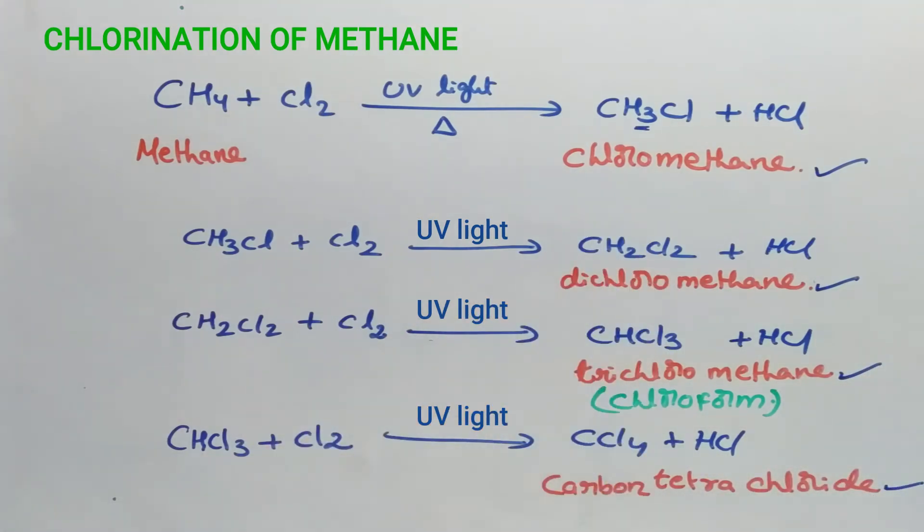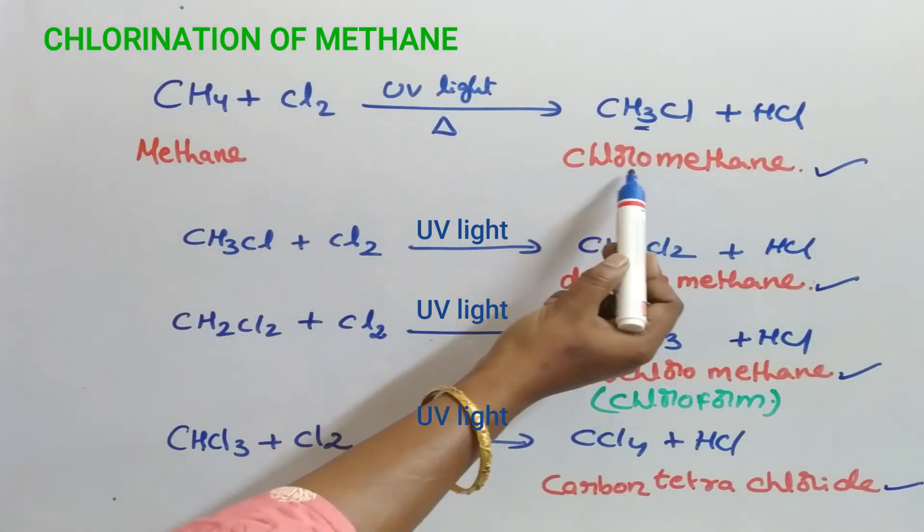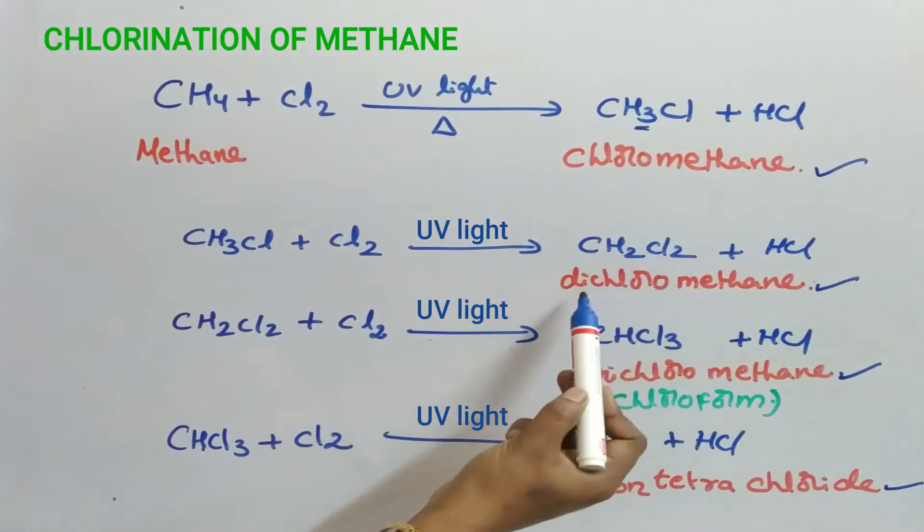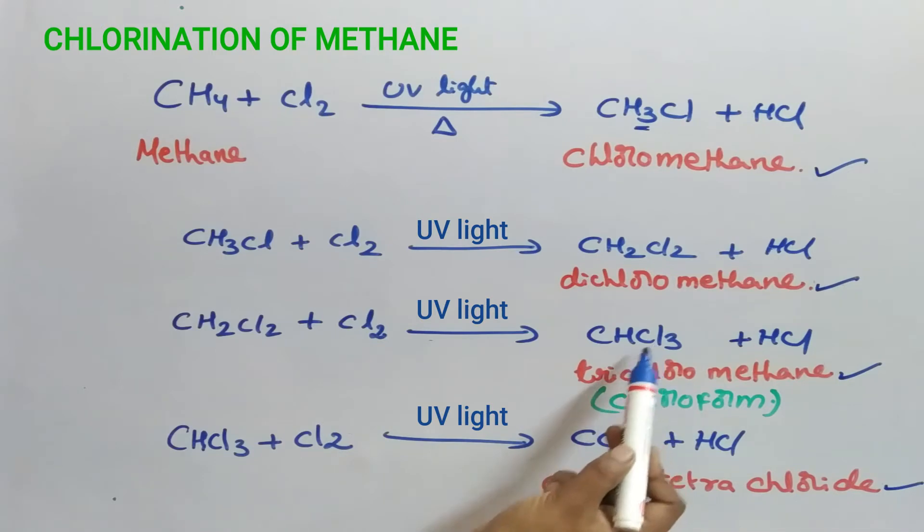These names are very easy to remember. One chlorine so chloromethane, two chlorines dichloromethane, three chlorines trichloromethane, four chlorines carbon tetrachloride.